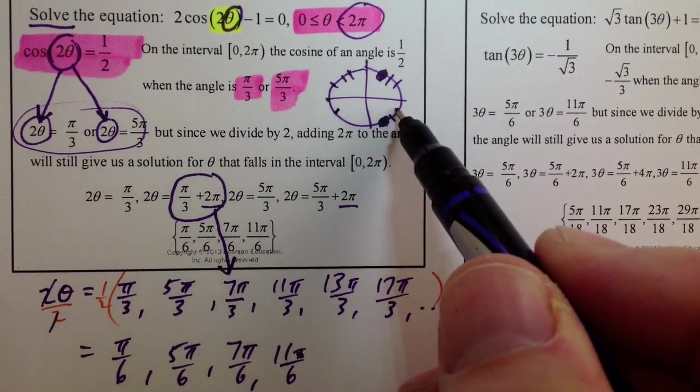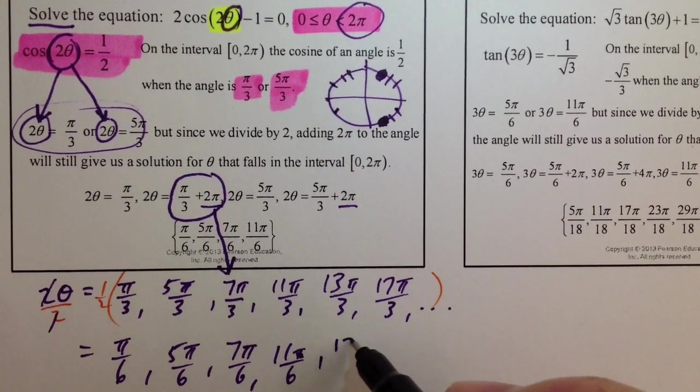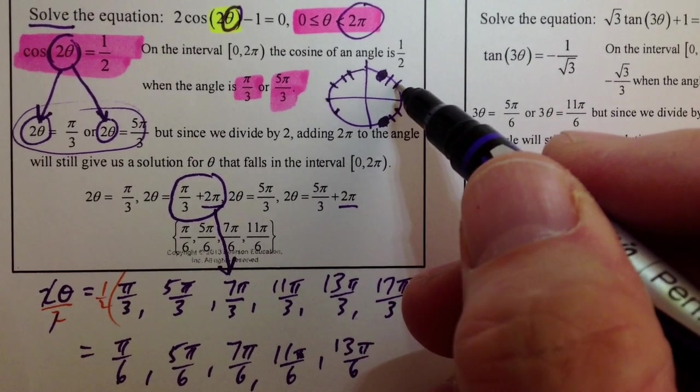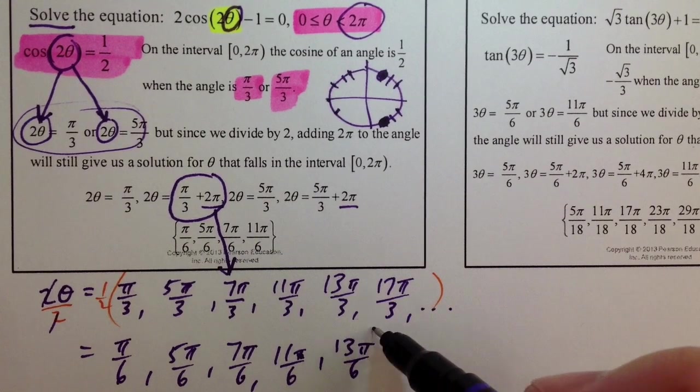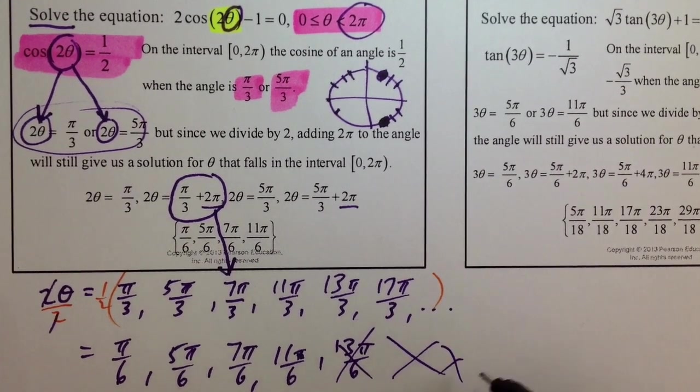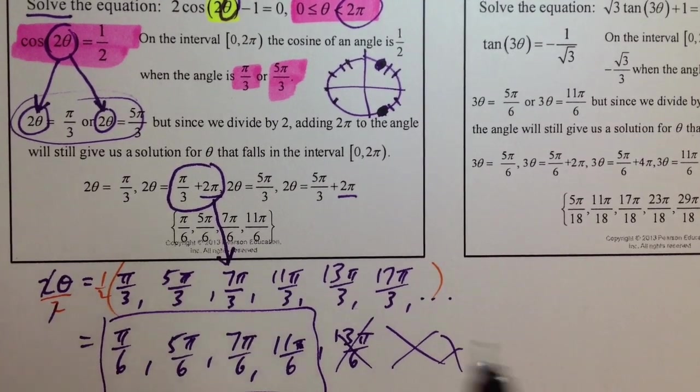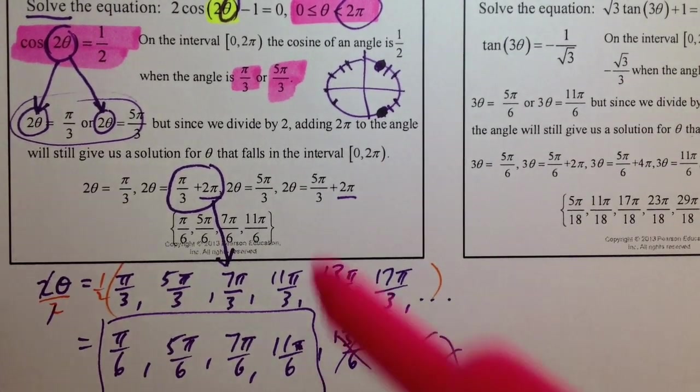7, 11. And then if we try to do 13 pi over 6, we are 1 pi over 6 past 2 pi. So, we can't use that, and we can't use any more. So, these are the four angle measures, which you can clearly see right here.